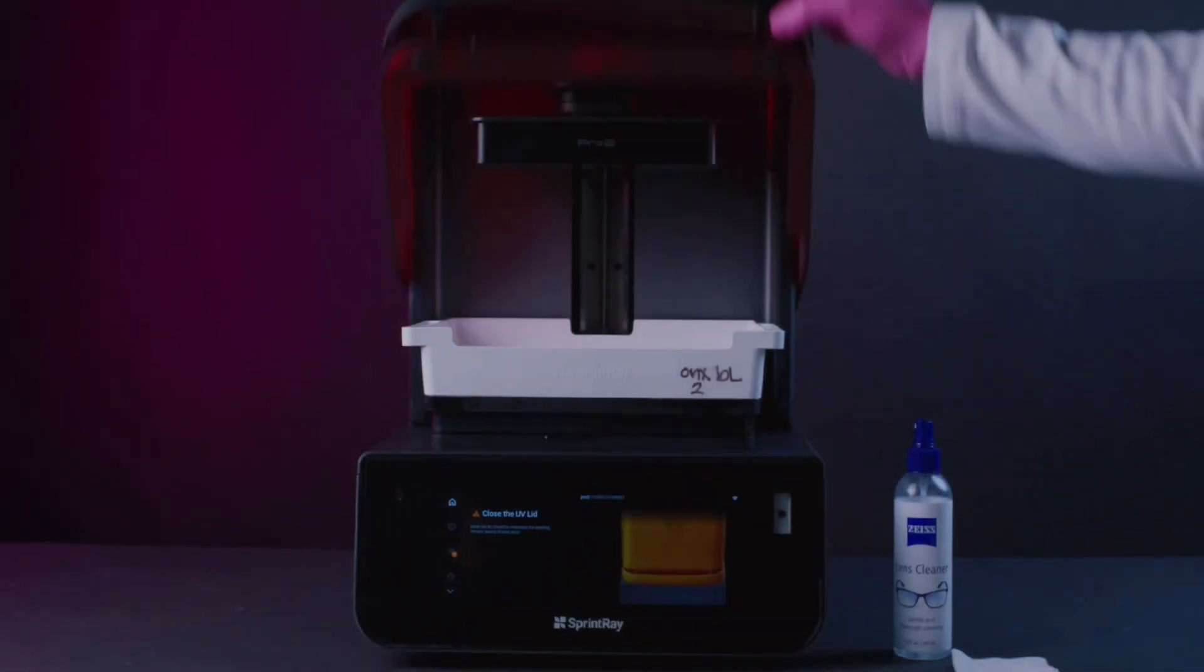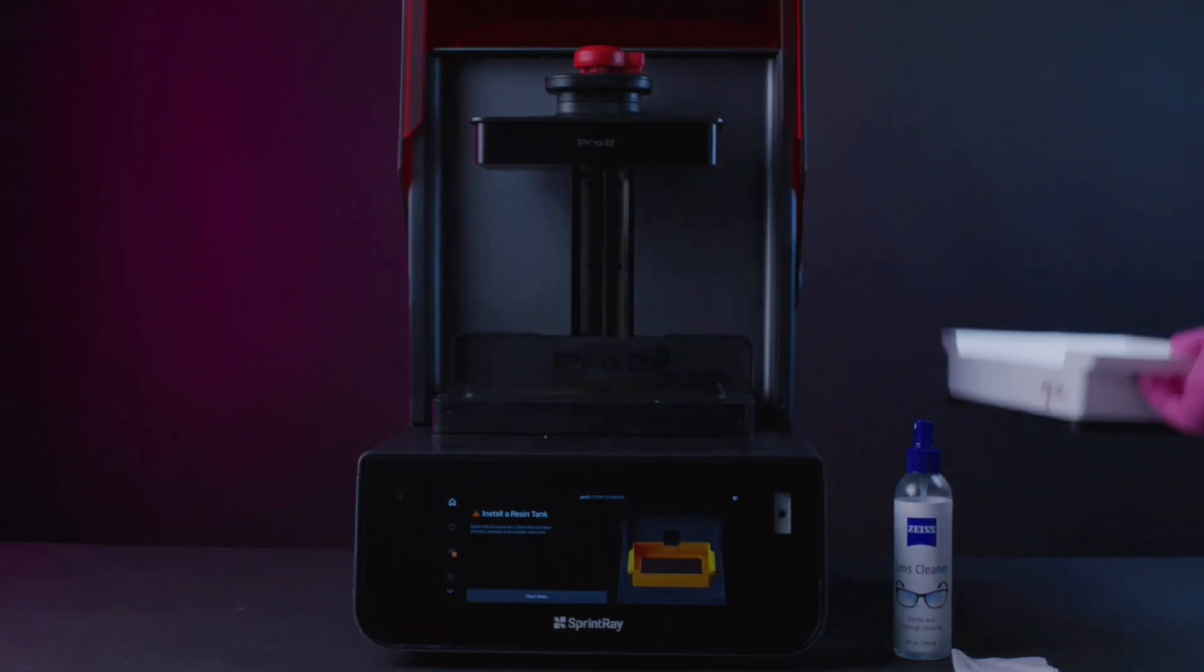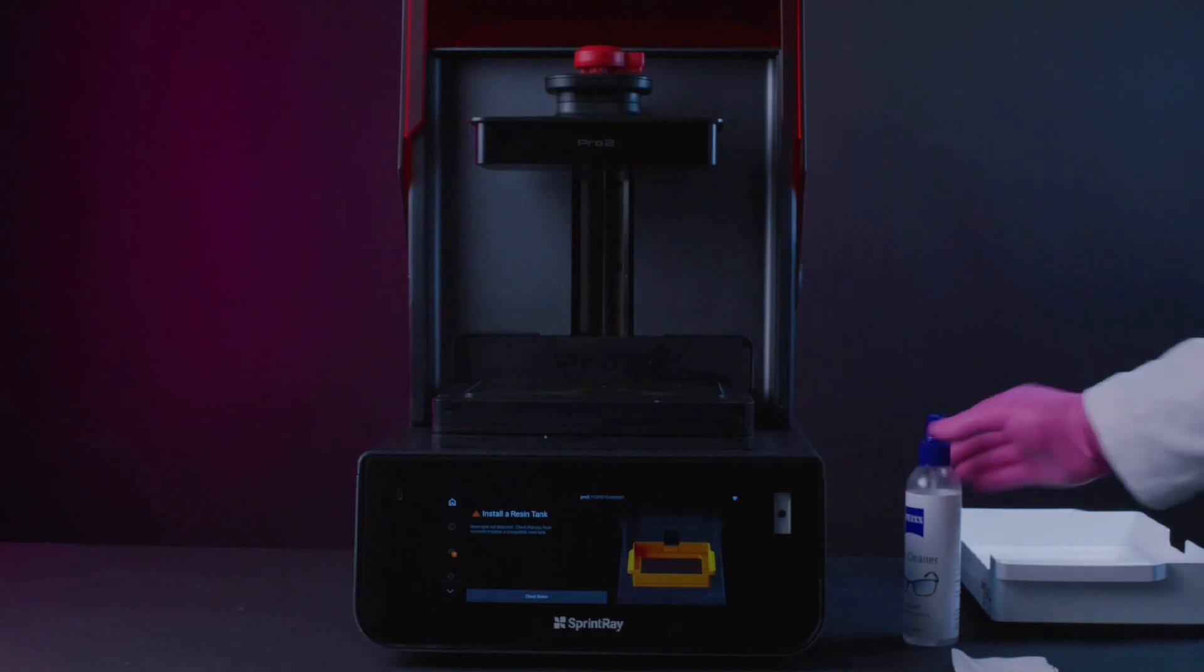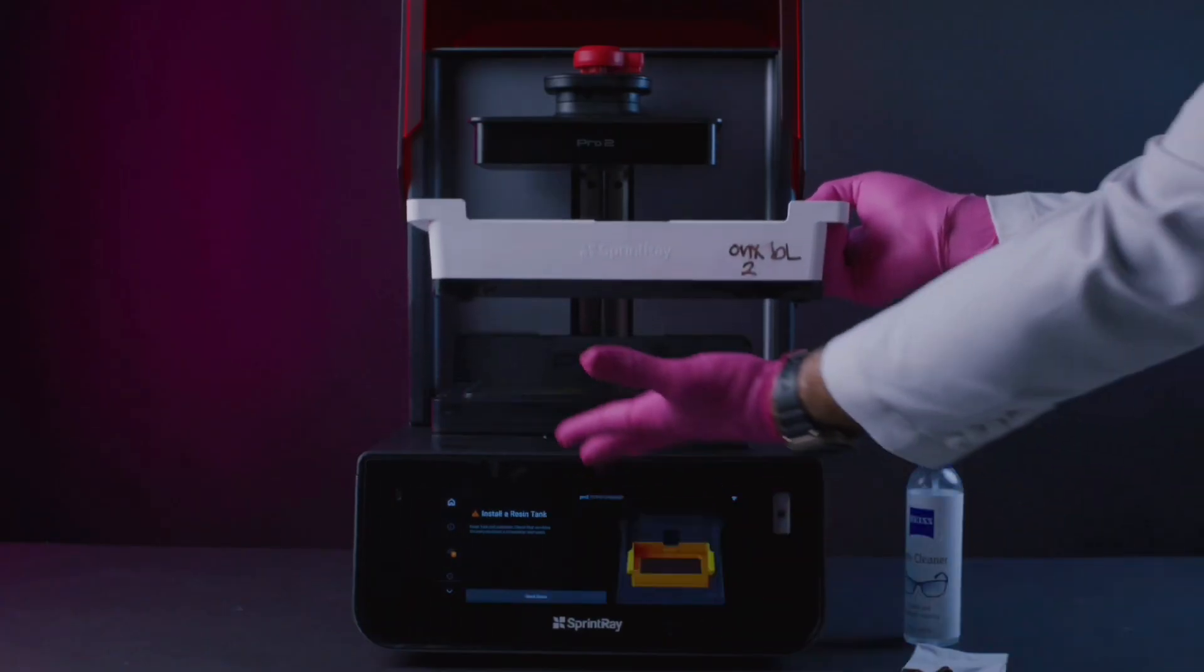Number one, you want to make sure that your optical panel is perfectly clear of dust and any kind of debris. Remove your resin tank, check the optical panel, the glass slab. Lens cleaner and a nice lint-free cloth is all you need.